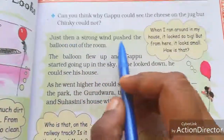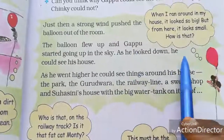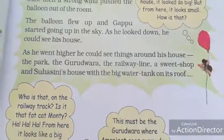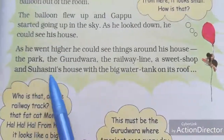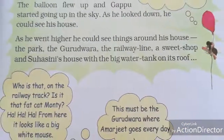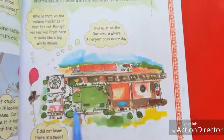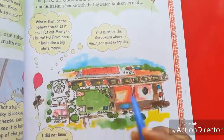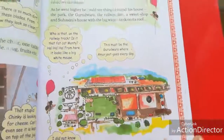Just then, a strong wind pushed the balloon out of the room. The balloon flew up and Gappu started going up in the sky. As he looked down, he could see his house. As he went higher, he could see the things around his house: the park, the Gurdwara, the railway line, a sweet shop, and Sushani's house with a big water tank on its roof.